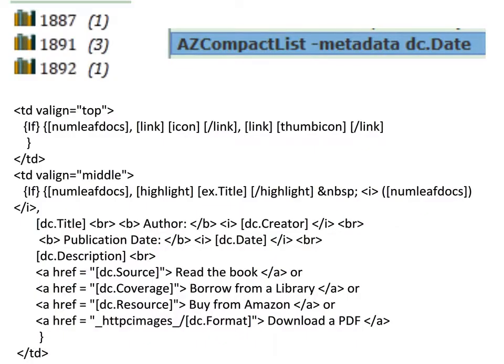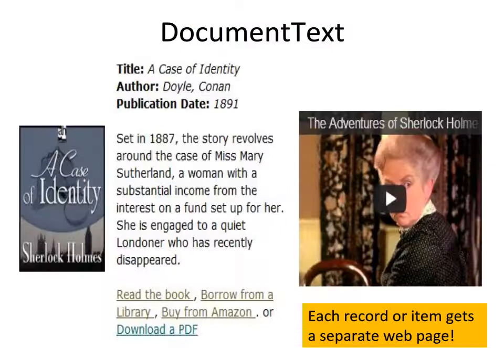Our code handled that. We used the if macro to test for the numleaf docs variable, and if it existed, we executed the code after the first comma. If it didn't exist, we were at the record index level and executed the code after the second comma. The other thing we did to add value was to link our book cover, which was the JPEG source content file, to the document text level using the link hyperlink tag.